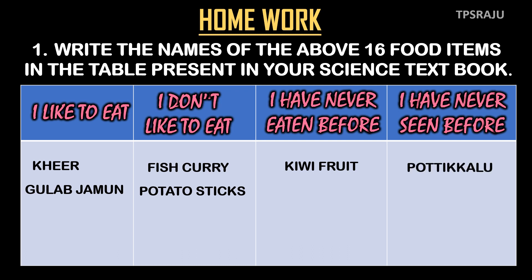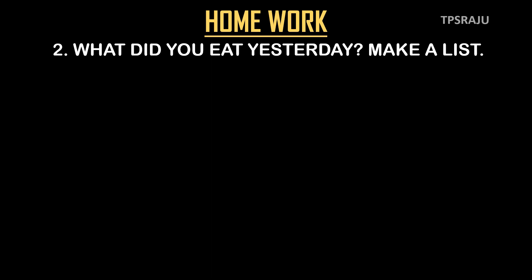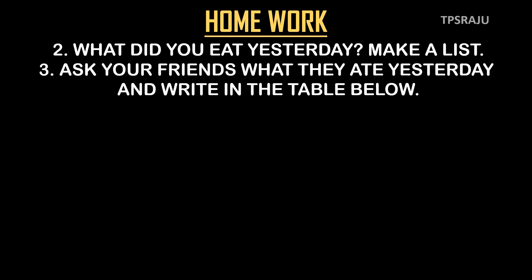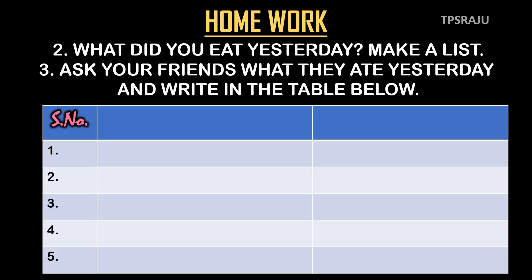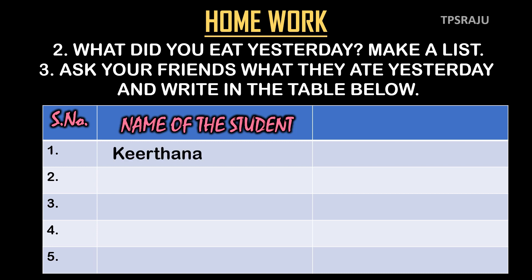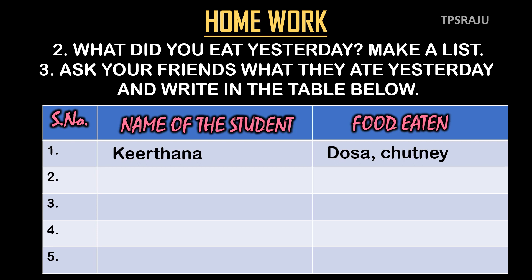Like this, fill the table in your science textbook. In the second table, in the first column write your number, in second column write the name of the student, and in third column write what they have eaten yesterday. Likewise, fill the table in your science textbook.